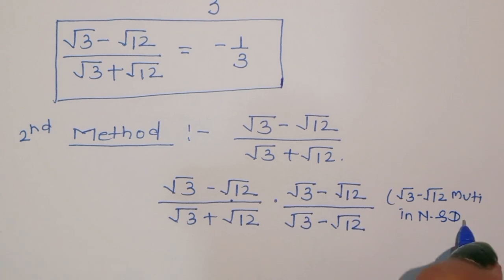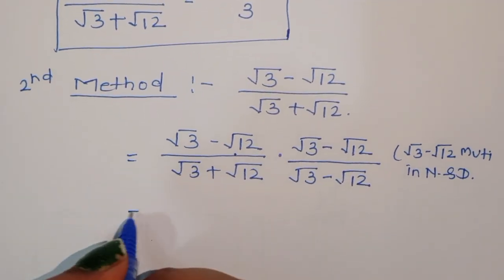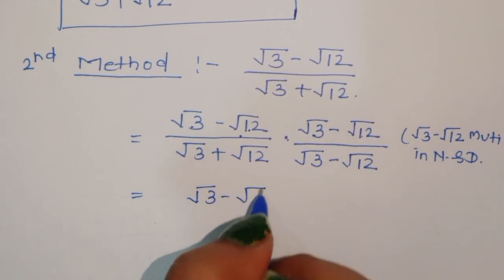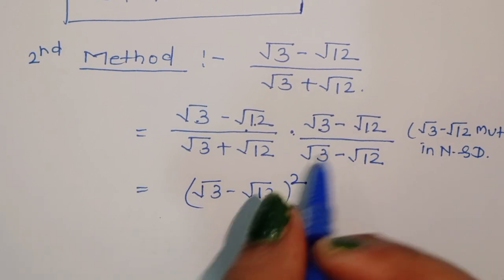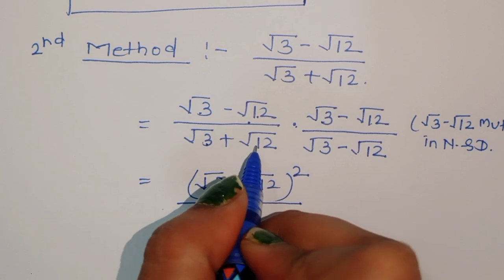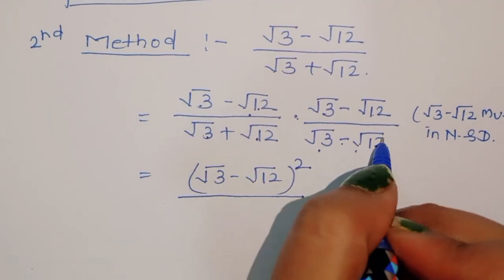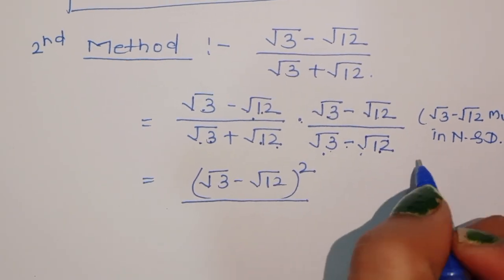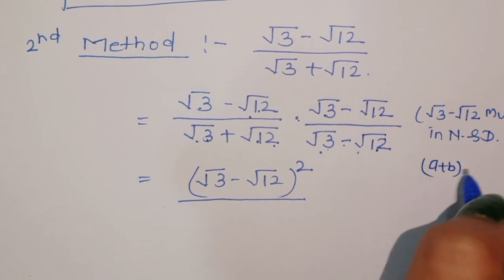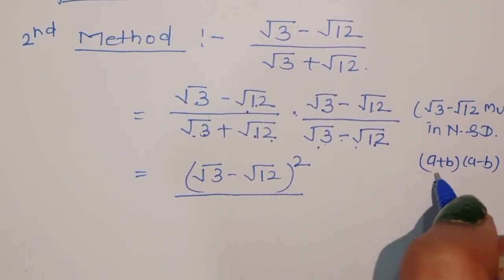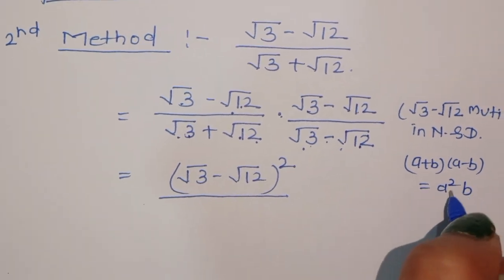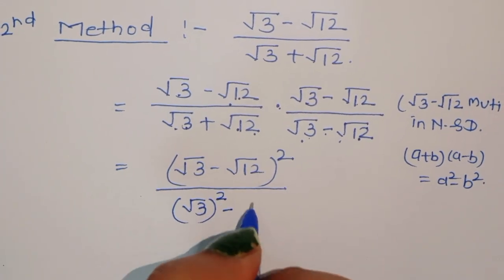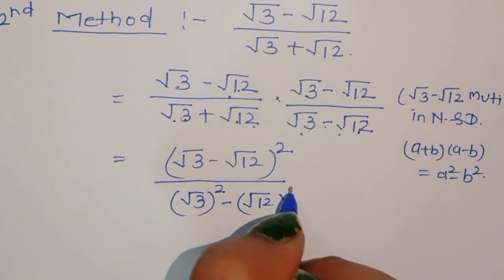The numerator becomes (square root of 3 minus square root of 12) squared, using the formula (a minus b) squared. The denominator becomes (square root of 3 plus square root of 12)(square root of 3 minus square root of 12), which uses the formula (a plus b)(a minus b) equals a squared minus b squared.